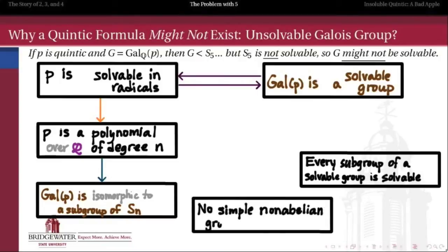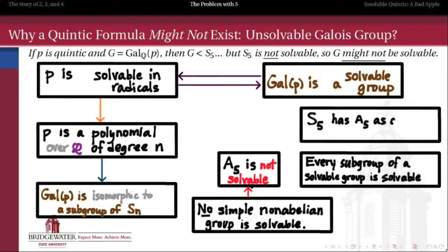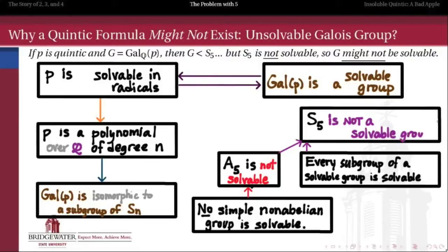We also have some facts from group theory about the structure of solvable groups. Specifically, we know that every subgroup of a solvable group will have to be solvable itself. We also know that any group which is not abelian and simple cannot be solvable. We've also convinced ourselves that A5, the alternating group on five symbols, is a simple group. Combined with the fact that A5 is not abelian, that implies that A5 is not a solvable group. But A5 is a subgroup of S5, and since every subgroup of a solvable group must be solvable and A5 is not, that implies that S5 is not a solvable group.